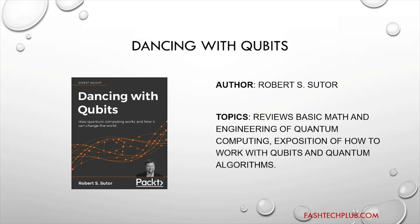Third is 'Dancing with Qubits.' This is for anyone who has a very healthy interest in mathematics and wants to start learning about the physics, computer science and engineering of quantum computing. It reviews basic math but things move quickly, so you can deeply dive into an exposition of how to work with qubits and quantum algorithms. Most of the coding is explained in Python, but it is not mandatory to learn Python beforehand, though it is always good to have some knowledge of programming. Maximum examples covered in this book come from the IBM Q quantum computing system.